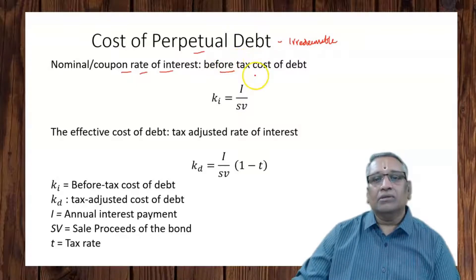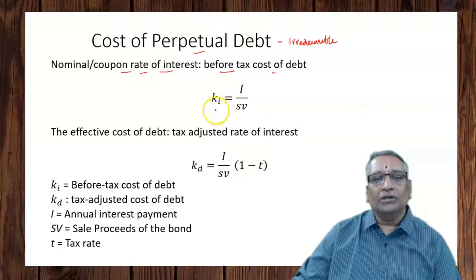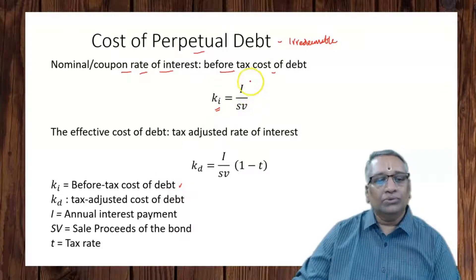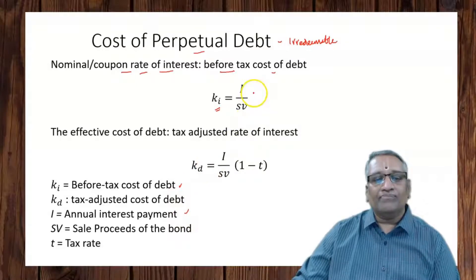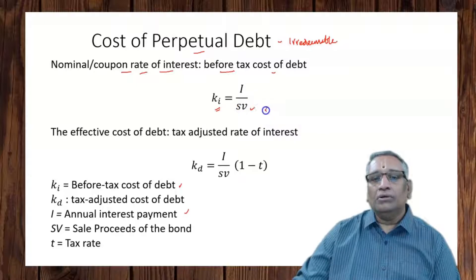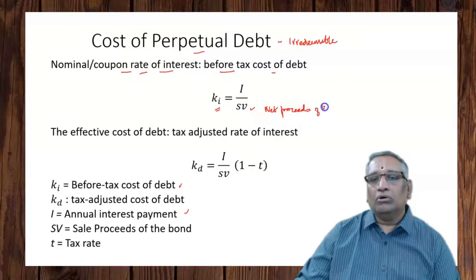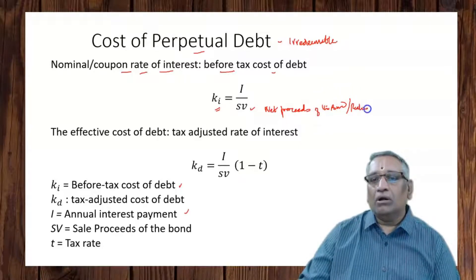In such a case, the before-tax cost of debt is the coupon rate of interest, calculated using the equation: Ki (before-tax cost of debt) equals annual interest payment divided by the sale proceeds, or net proceeds, or the amount realized by issue of the bond.